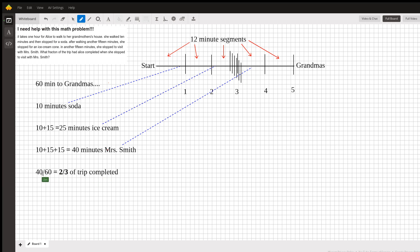In the math, 4 over 6, 2 over 3. Divide 20 into the numerator, 20 in the denominator, and you get two-thirds of the trip completed.